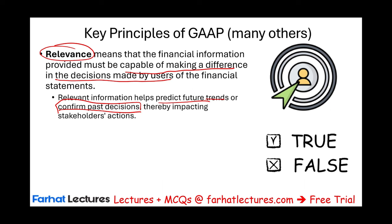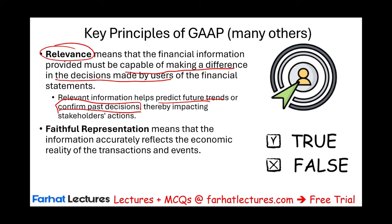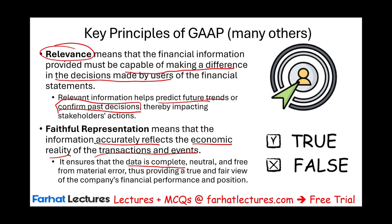It's not only relevant — it also has to have faithful representation, meaning it's true. It must reflect the true economic reality of the transaction and event, so the transaction that you are reporting actually happened. This ensures that the data is complete, neutral (it doesn't favor one group over the other), and free from error. You cannot have major errors. The key is to provide a true and fair view of the company's financial performance and position. So it has to be relevant and it has to be faithful representation.